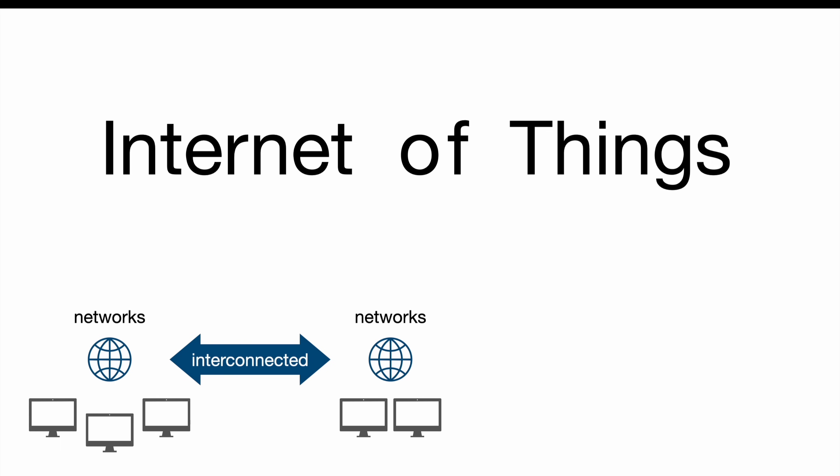But since we're talking about IoT, we are talking about interconnected networks of things. While the traditional Internet consists of computers, tablets and smartphones, things can be everything from a light bulb or socket up to a fridge or sensor. So all those things are now organized in a network and connected to each other via the Internet.